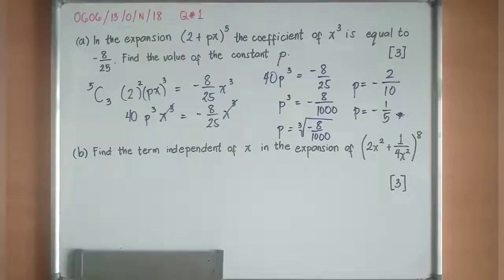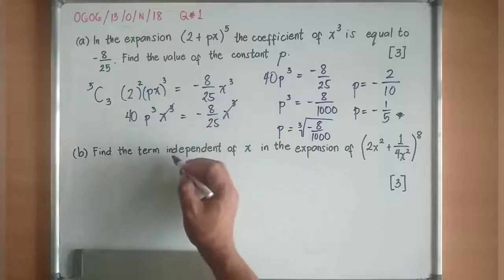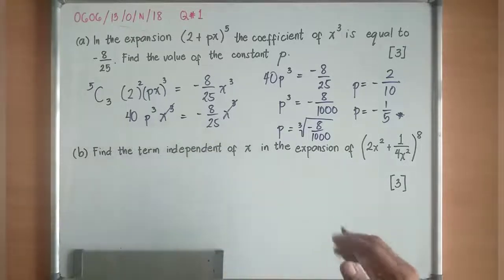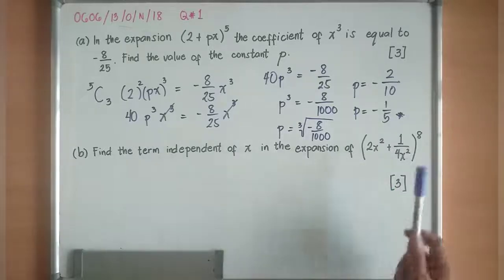How about for letter B? Find the term independent of x in the expansion of (2x^2 + 1/4x^2)^8. So you will notice here that I need to come up with something that is independent of x.